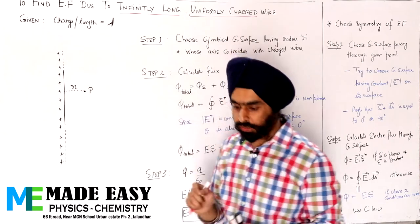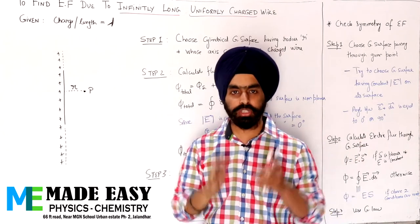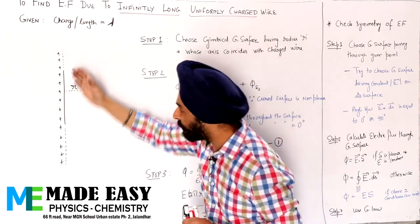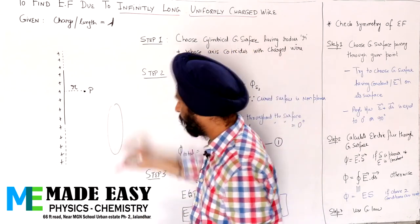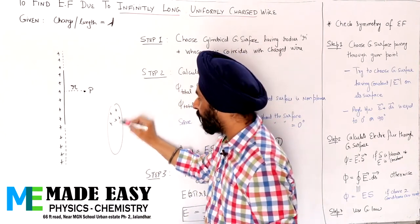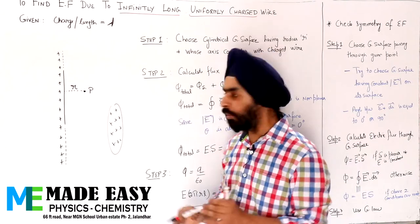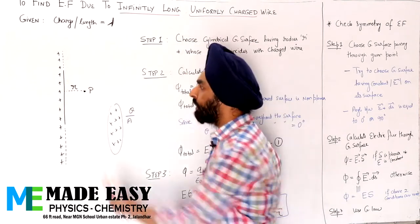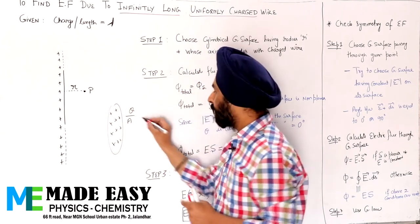One important thing to understand: whenever you have a configuration that is infinite in size — a very large object — we generally don't talk about its total charge. Instead, we talk about charge per unit length. Given here is charge per unit length equal to lambda (λ). Similarly, if you have a large sheet with charge uniformly distributed, rather than total charge, we prefer to give charge per unit area.